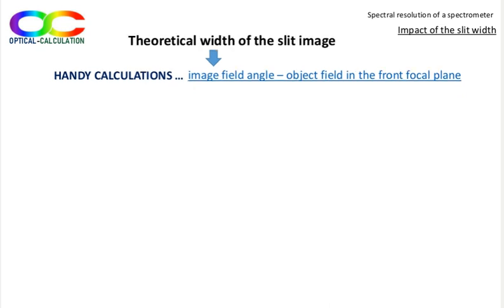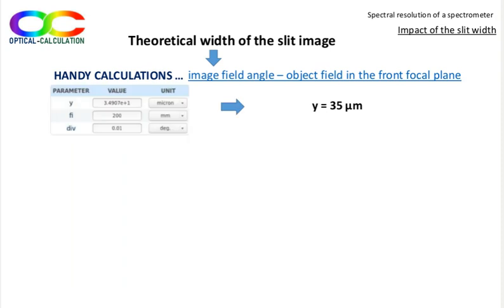We can then go back to the previous calculation page, used in the reverse way for obtaining the width of the slit image on the detector. We know the divergence of the diffracted beam, which is 0.01 degree, parameter div, and the focal length of the focusing mirror, which is 200 mm, parameter Fi. That gives a field size of 35 microns, parameter Y, which is in our case the width of the theoretical image of the slit.